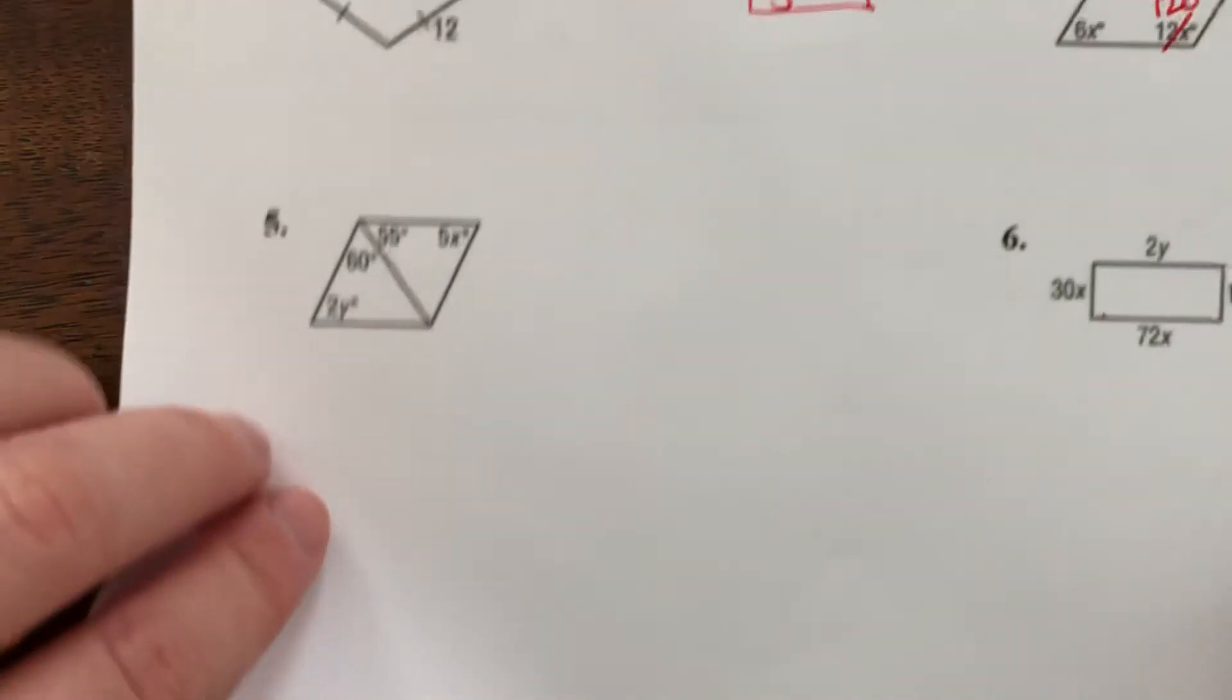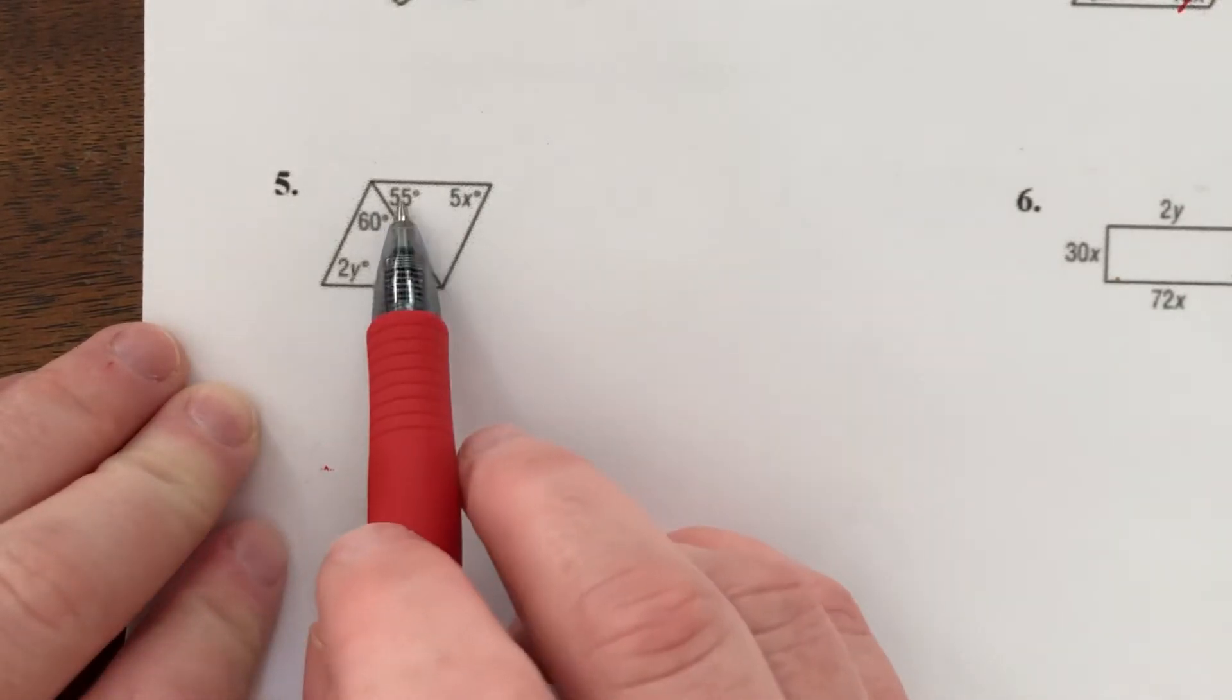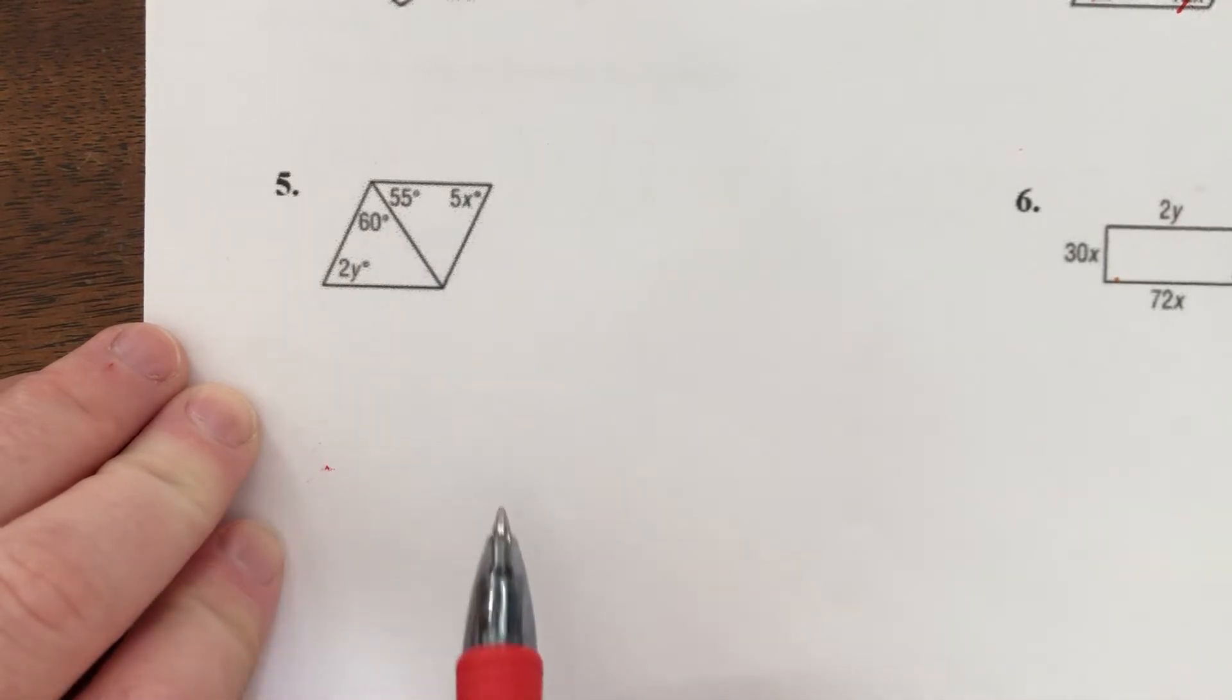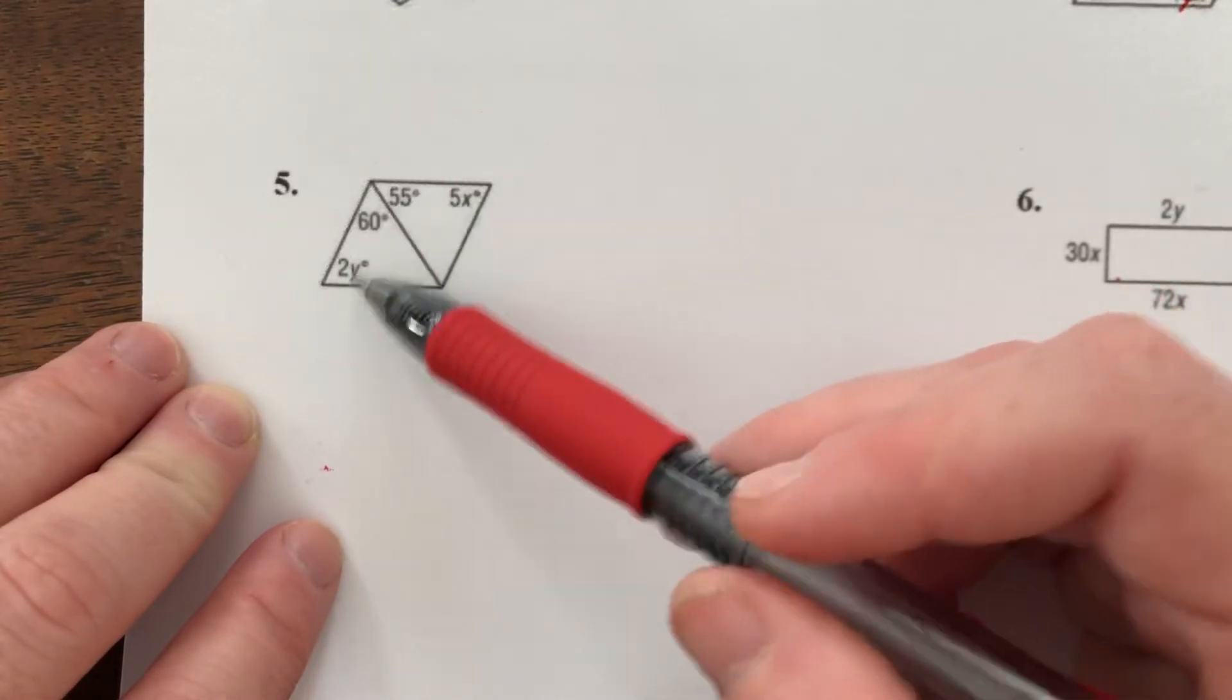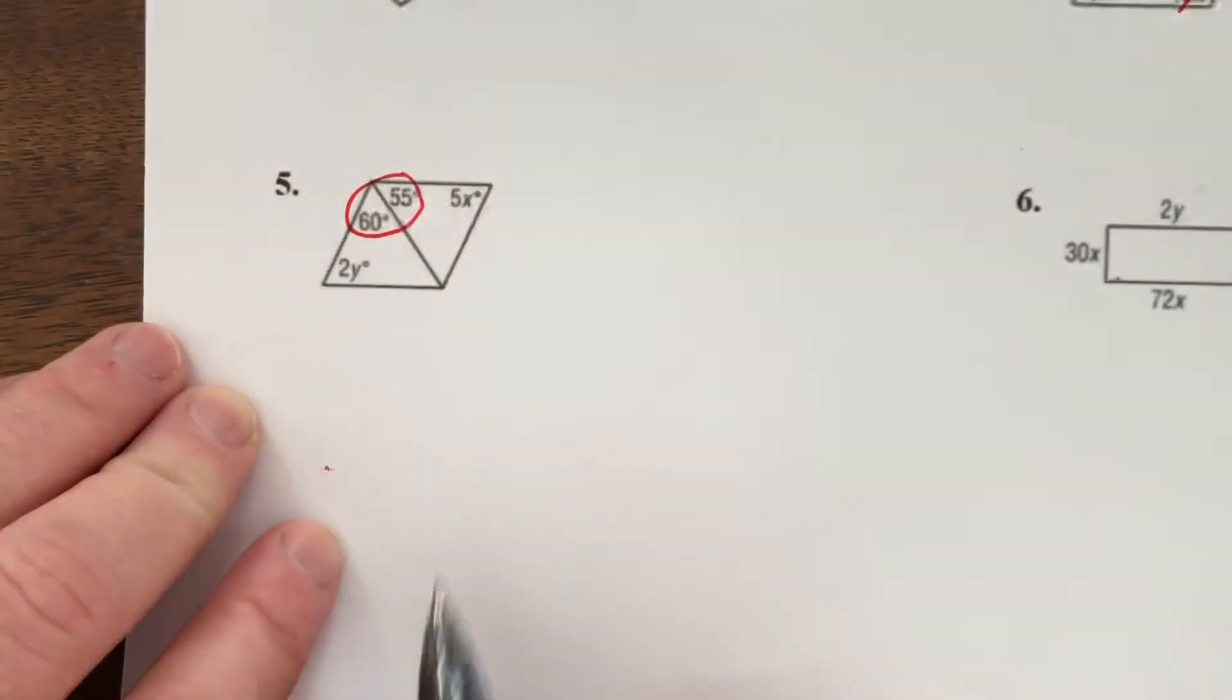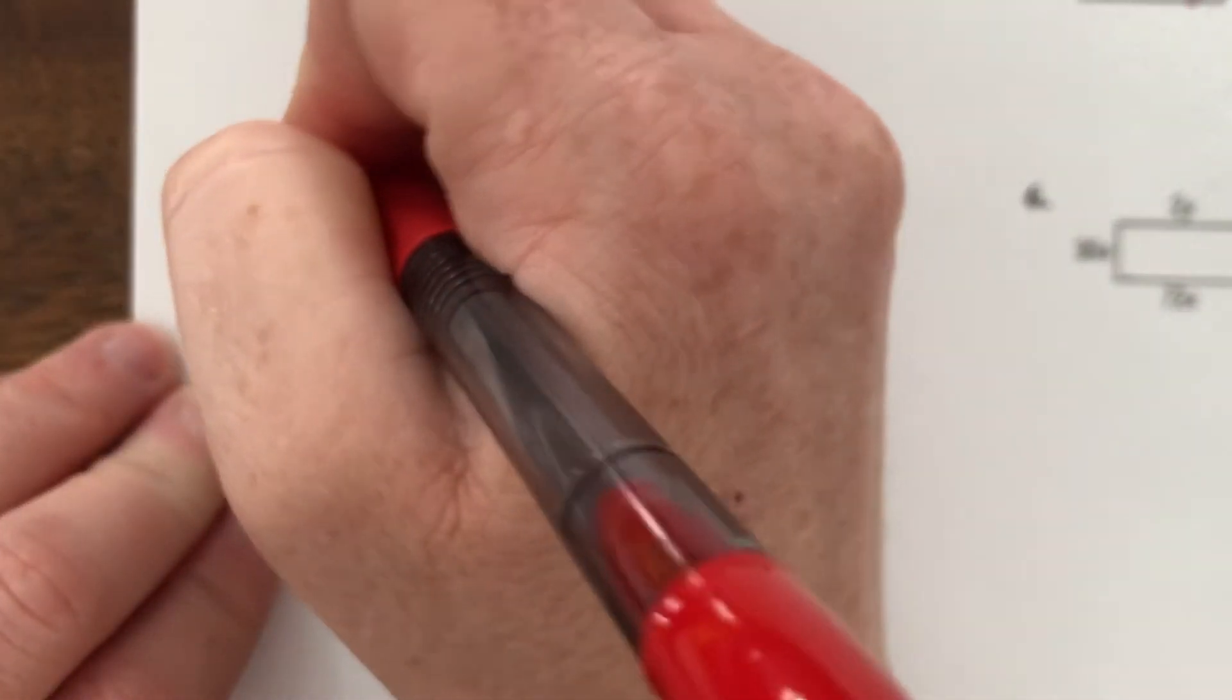Two more. Number 5. Here, I have a 55 degree angle, 60, 2y, 5x. So how can I use these to help myself? Well, I know angles next to each other are supplementary. So this whole big angle here is made up of two smaller angles. 60 and 55 is 115.